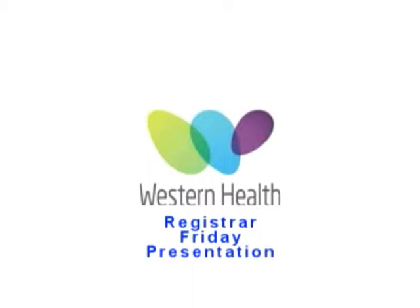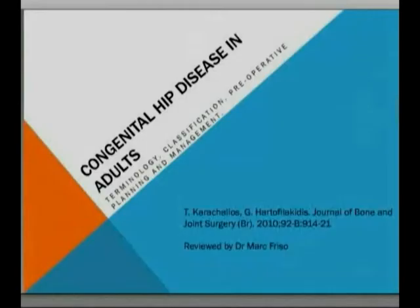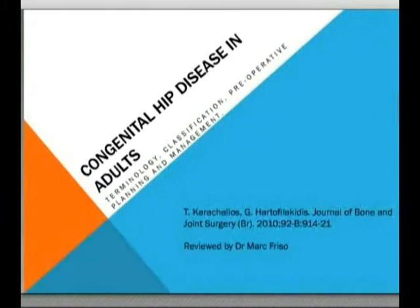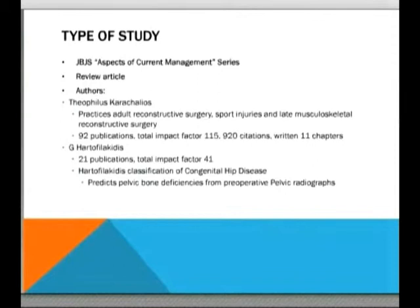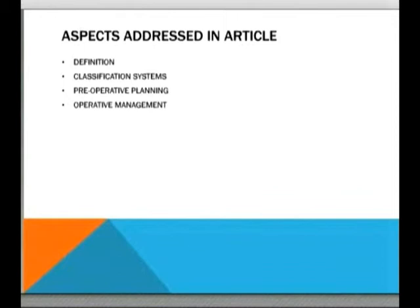Good morning everyone. The topic of discussion today is developmental hip dysplasia, and the article we're using as a base is titled 'Congenital Hip Disease in Adults.' The two authors are T. Karakalios, a Greek surgeon who practices adult reconstructive surgery with 92 publications, 11 chapters, and over 920 citations, and co-author Harto Philokyans, who has 21 publications and is the original proponent of the classification system to be discussed. This review article appeared in the JBJS 'Aspects of Current Management' series and covers the definition of developmental hip dysplasia, classification systems used for pre-operative planning in adults, and recommendations on operative management.